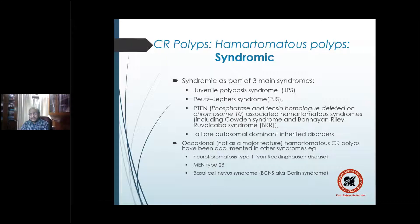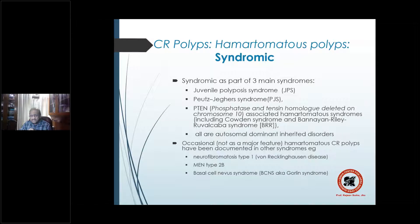The three main syndromic hamartomatous polyp syndromes are juvenile polyposis syndrome, Peutz-Jeghers syndrome, and PTEN-associated hamartomatous syndromes. Common PTEN-associated syndromes include Cowden syndrome and Bannayan-Riley-Ruvalcaba (BRR) syndrome. All of them are autosomal dominant inherited disorders.